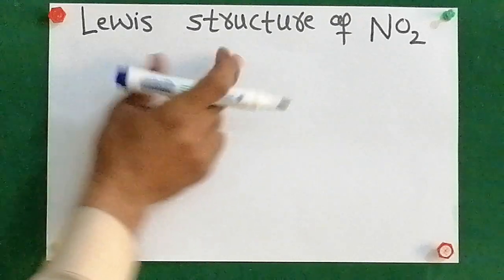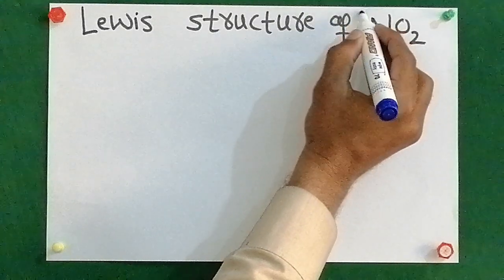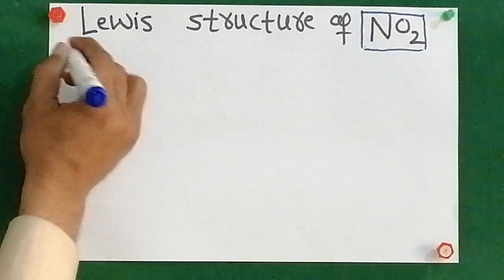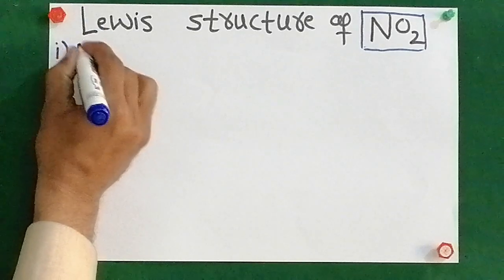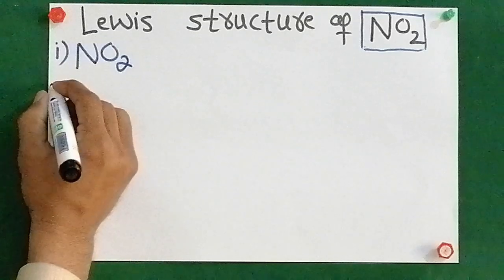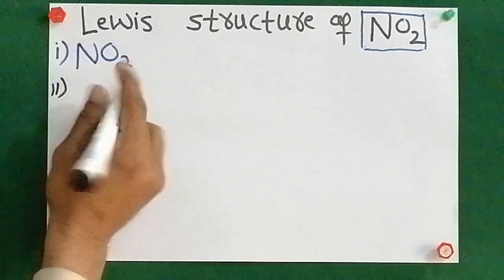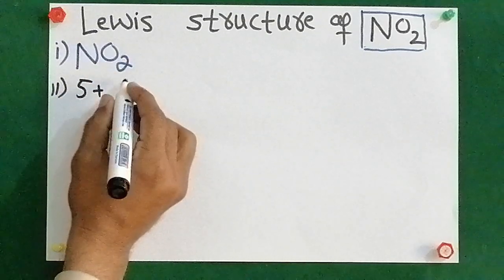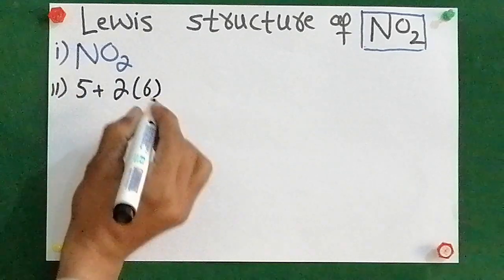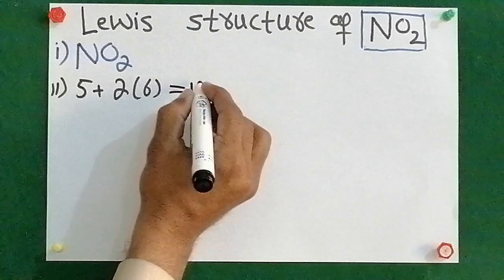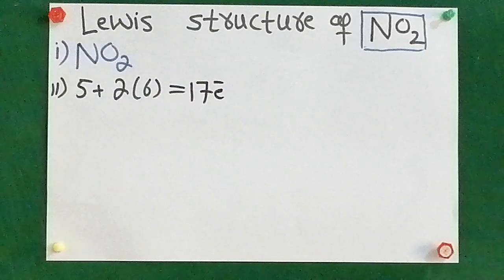Okay students, now I am going to explain the Lewis structure of nitrogen dioxide. First I am going to write the compound nitrogen dioxide. I have to determine the total number of electrons: nitrogen has five valence electrons, plus oxygen has six valence electrons, and because of two oxygens that's 12, so the total number of electrons is going to be 17.